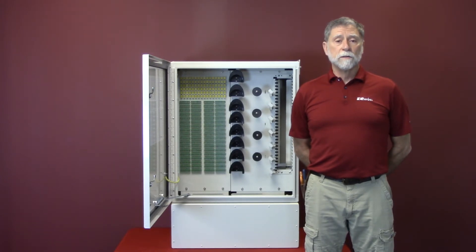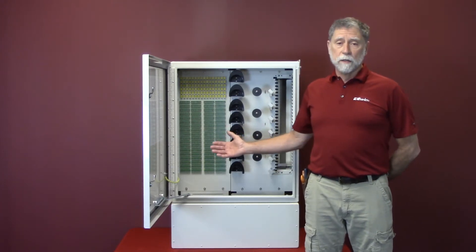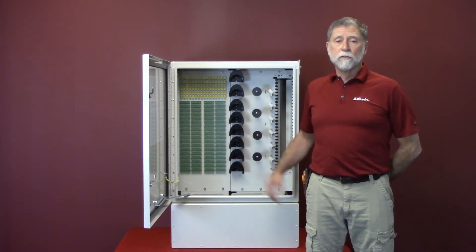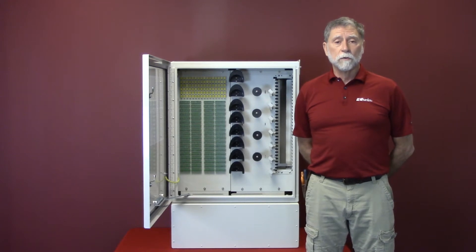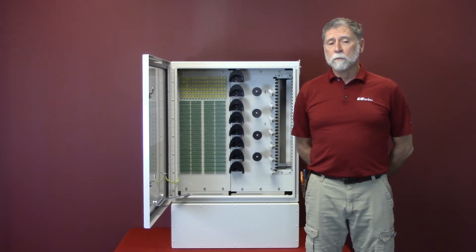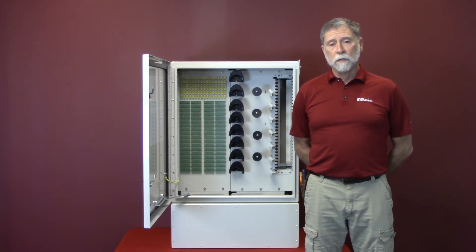Today I will demonstrate the installation of a splitter into an optical hub cabinet or OHC. We'll be using the OHC 432 and a 1 by 32 splitter. The routing of the splitters is the same regardless of the size OHC you'll be using in your deployment.